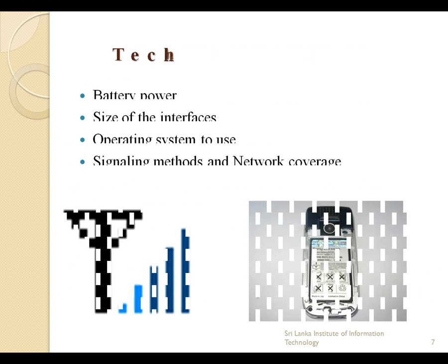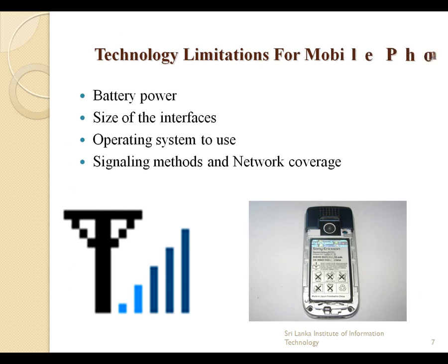Let's talk about the technology limitations for mobile phone development. First is battery power — mobile phones have limited power since a battery is used, so every aspect of performance must consider the power the battery can supply. Second is size of the interfaces — the phone display is limited, and when creating applications, interface size plays a major role since content must be visible and appropriate. Next is operating systems, which must be appropriate to the technologies and user-friendly. Another limitation is signaling methods and network coverage.